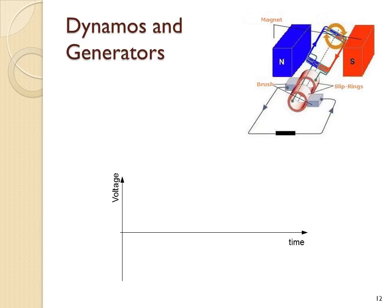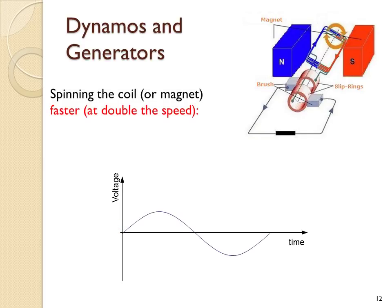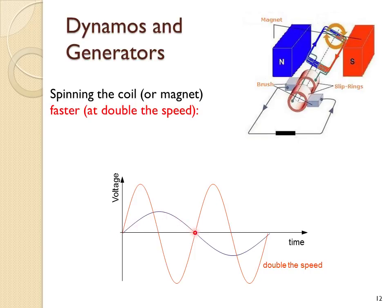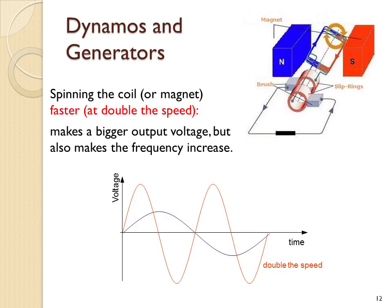If we plot a graph of voltage against time for a generator, because it's an alternating current output, you get an alternating voltage waveform. If you were to spin the coil — or a magnet in the case of a dynamo — at double the speed of rotation, you'd get an output voltage with double the amplitude, as you induce twice the voltage across the wire. Note also that the frequency has increased — the frequency is now double. Here we get one complete wave in the time that the original makes half a complete wave. So you get a bigger output voltage, but you also get an increase in frequency.